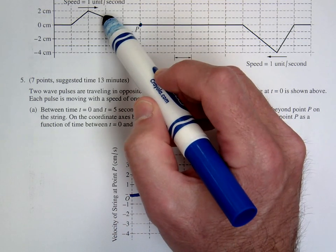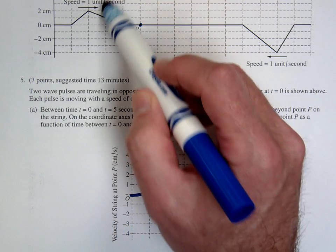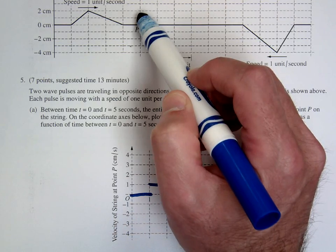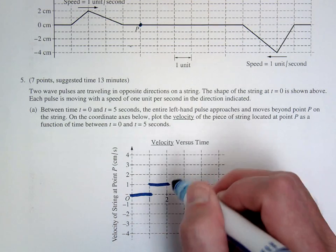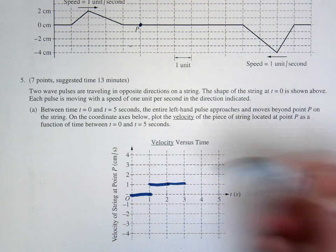In the next region we're going now from one centimeter to two centimeters, P is going up, say from here to here. And again it's going one centimeter per second, so we'll just continue up this way.